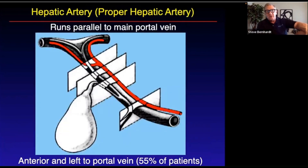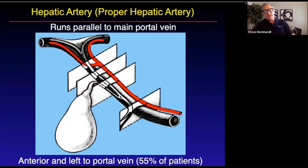Here you can see the main portal vein coming in. Here is the proper hepatic artery coming up, and it divides into the right and the left hepatic artery. Here you can see the ductal system, and from where the cystic duct drains into the common duct, the common hepatic duct is superior to that. The common bile duct is inferior to that.